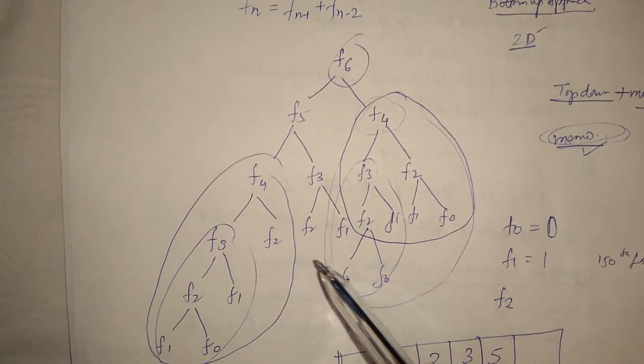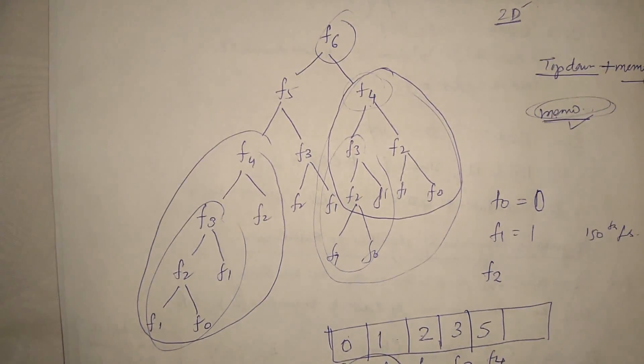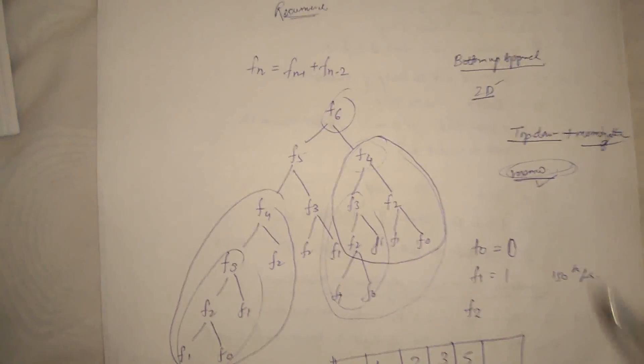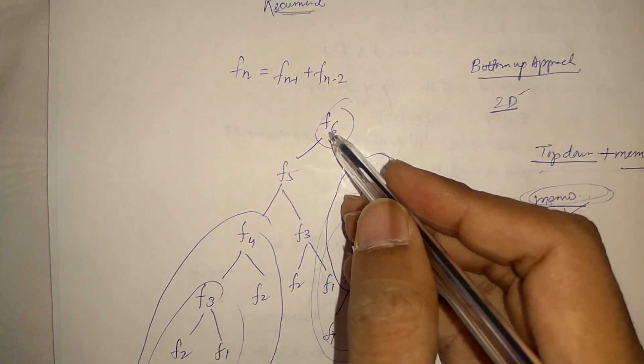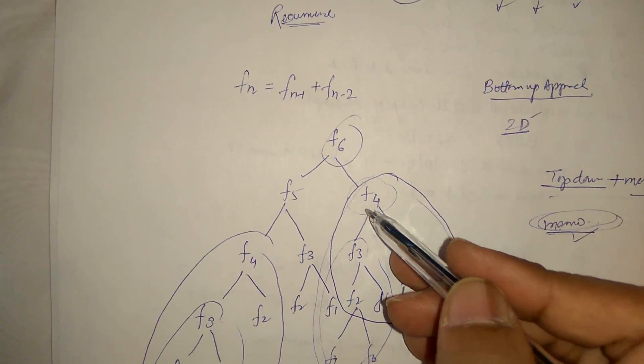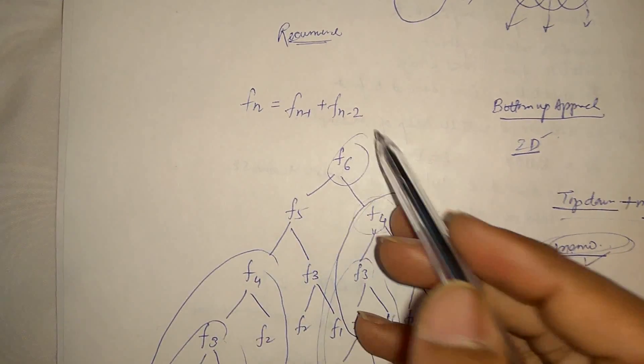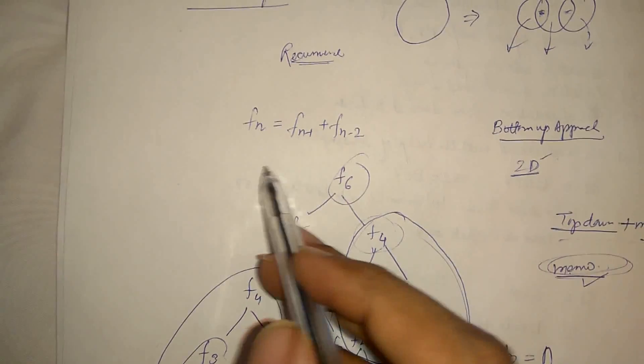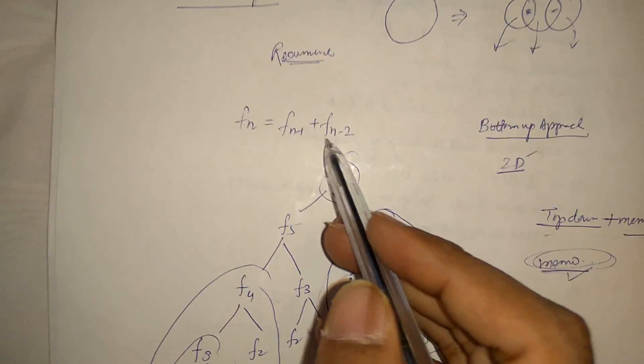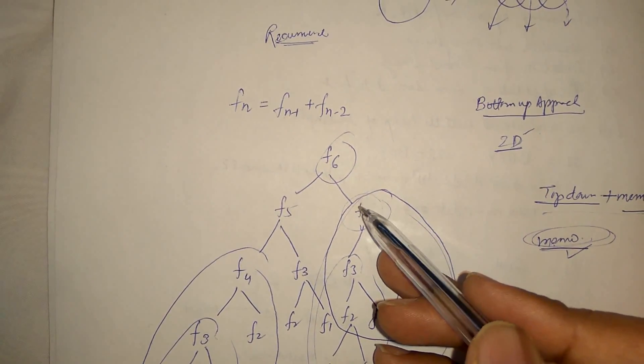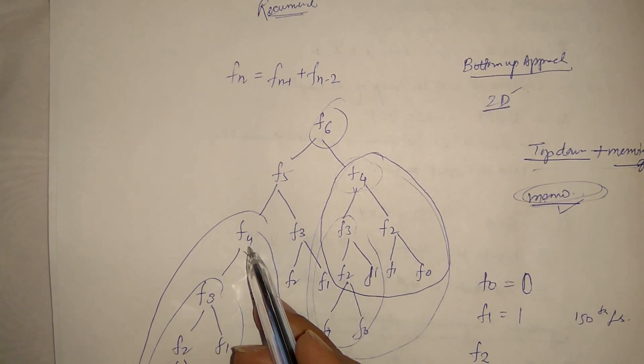So as we can see, we have overlapping subproblems here. That's why we are applying dynamic programming here. Now what happened in top down? In top down, we start from computing F6. When we are computing F4 in this recursion method, we use recursion method, but with memoization. So we store this value of F4 and we will use F4 when we want to compute here.